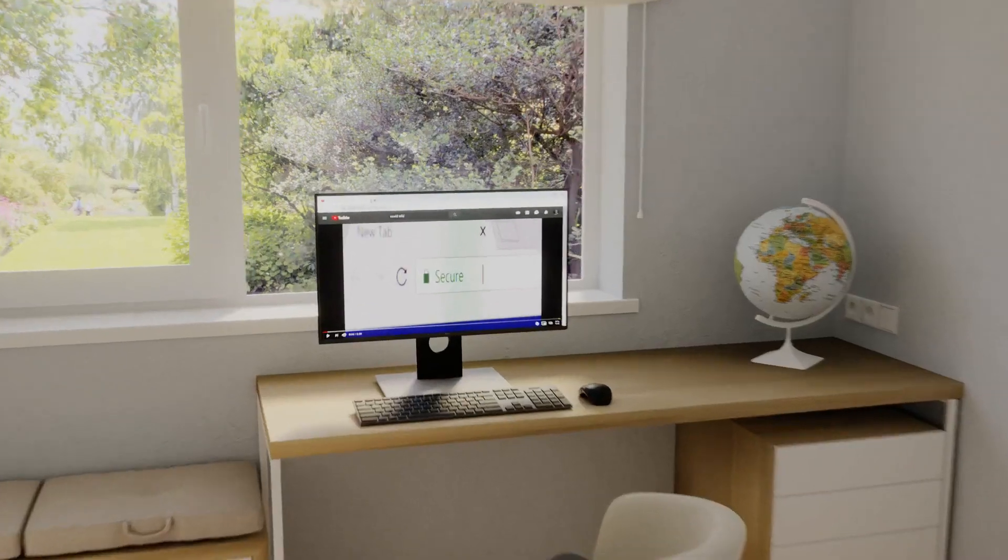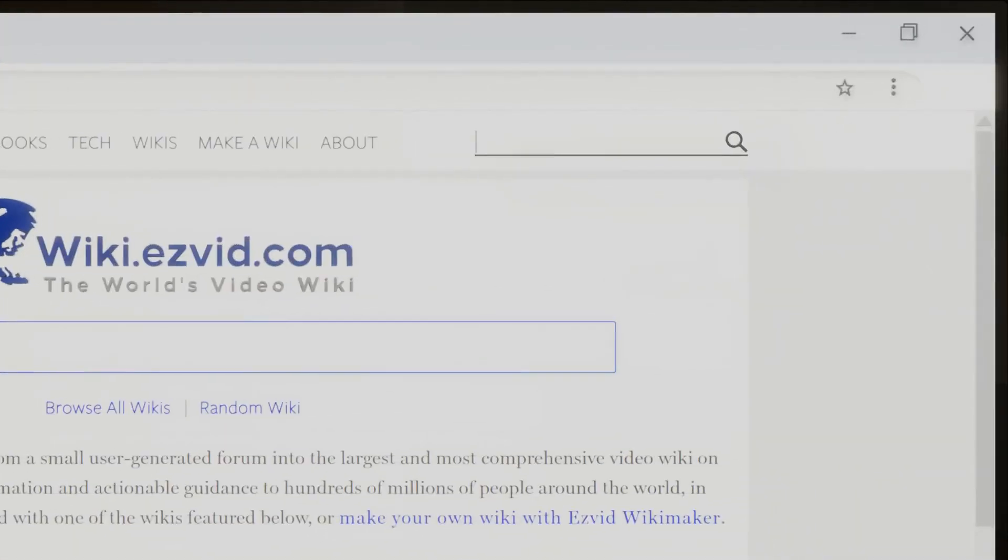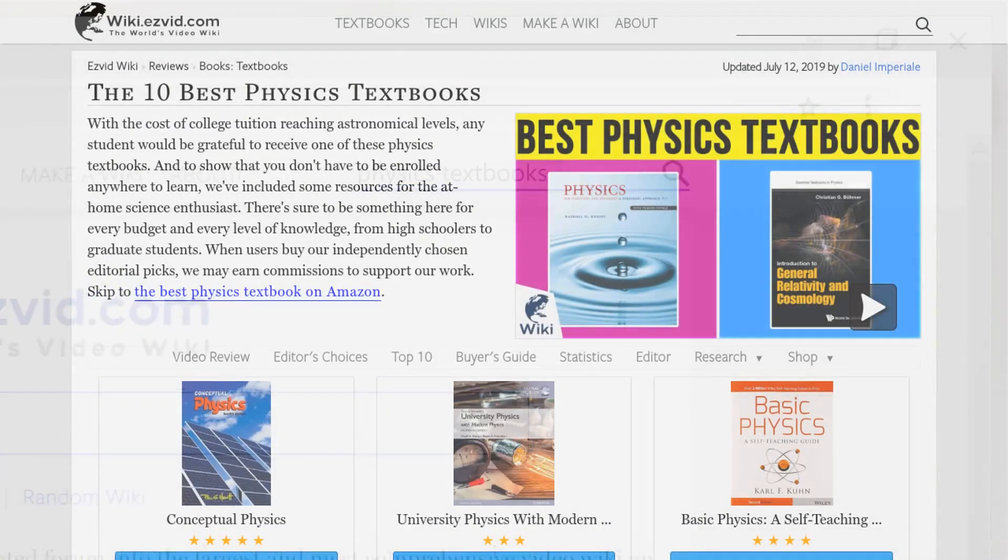Our newest choices can only be seen at wiki.easyvid.com - go there now and search for physics textbooks or simply click beneath this video.